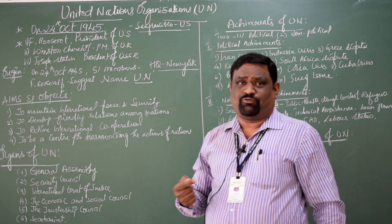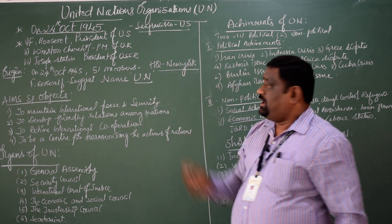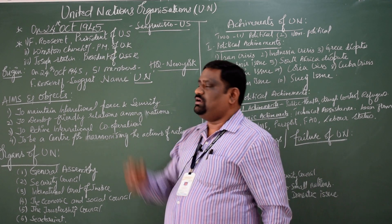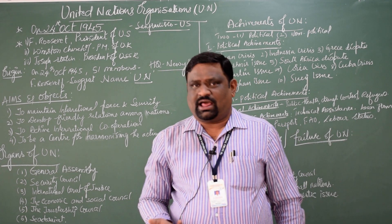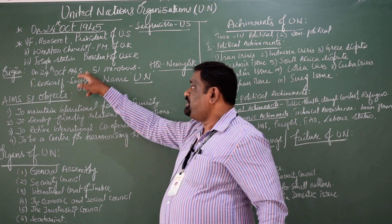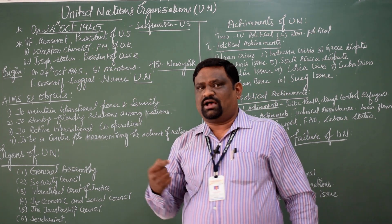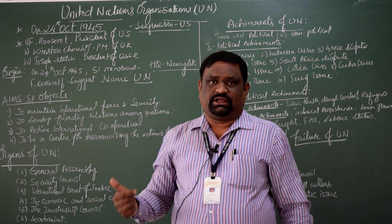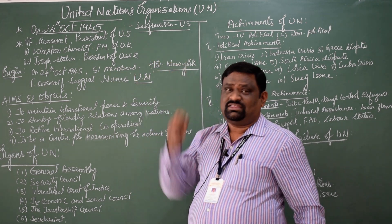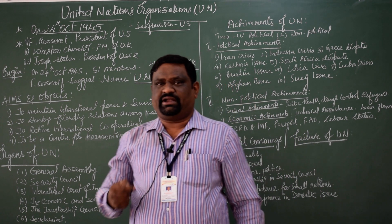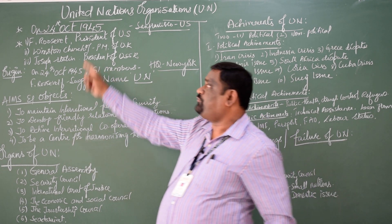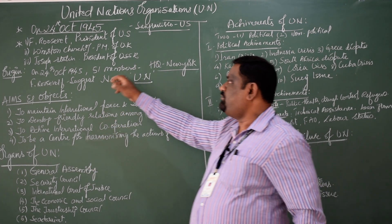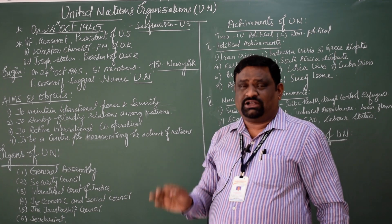I would like to share important information about the member countries. These three leaders and heads of three big states struggled and tried to establish the world organization also known as the world parliament. India was one of the founder member countries. You might ask how India was a part of this because at that time India was still under the colonial system of England. Even under that colonial influence, India participated as an independent and sovereign country to sign the agreement and draft framed by the leaders. Including India, there were 51 members in the conference and all 51 members signed the basic draft and charter of the UNO.